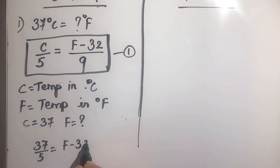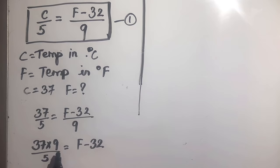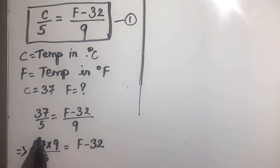Now we will cross multiply. So 37 times 9 over 5 is equal to F minus 32. Calculating 37 times 9: 7 times 9 is 63, carry 6; 3 times 9 is 27, plus 6 is 33. So 333 over 5 is equal to F minus 32.